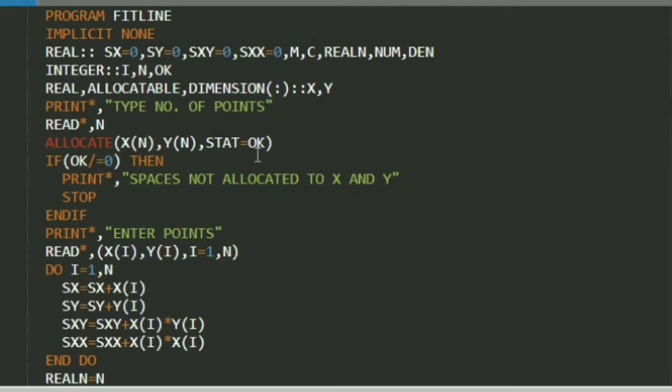If our arrays are allocated, then the stat is by default to the value of 0. Otherwise, it will be a non-zero integer.